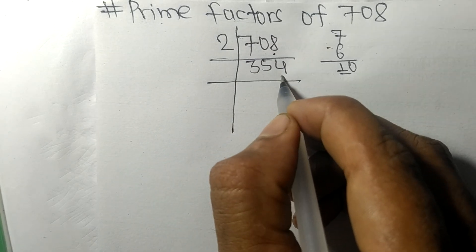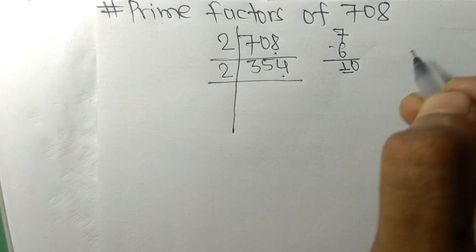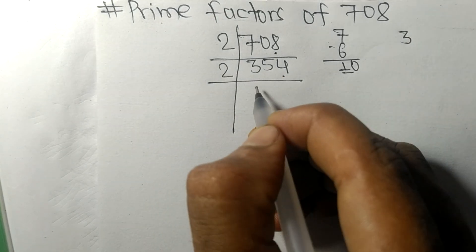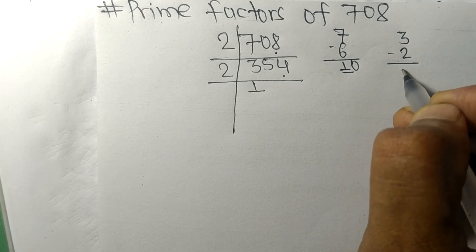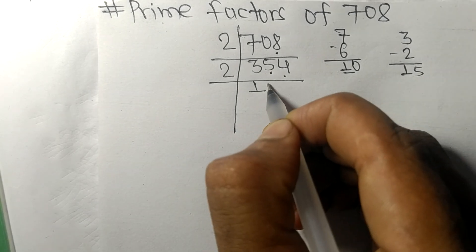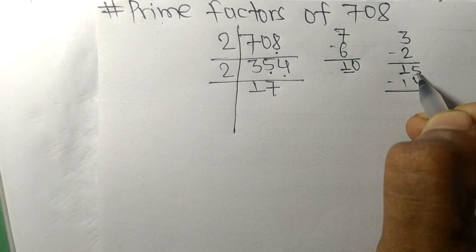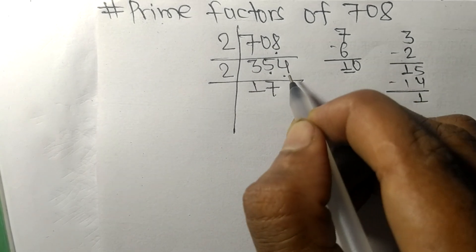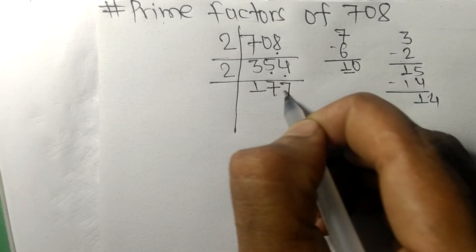Here is 3, 2 times 1 means 2, remainder 1. And this 5, 15, 2 times 7 means 14, remainder 1. And this 4, 14, 2 times 7 means 14.